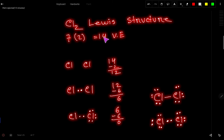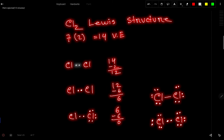Let us connect the two chlorine atoms. We have connected them by using two dots, which means one single line or one bond.